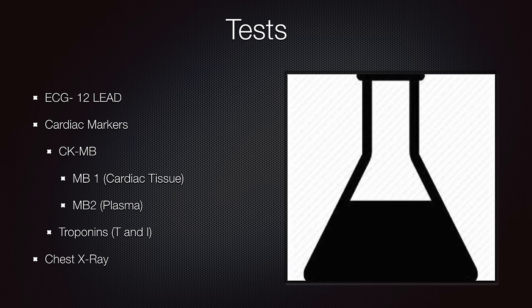When you're looking at the causes of chest pain, there are certain tests you need to do in order to help figure out the puzzle pieces. You're going to look at an EKG — a 12-lead EKG. There are blood markers such as CKMB, specifically MB1 which is specific for cardiac tissue, MB2 which is found in the plasma, troponins T and I, and chest x-rays. These are all tests essential and vital when working up a patient with chest pain.